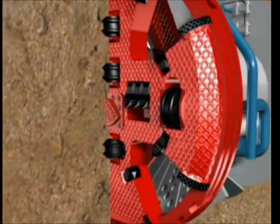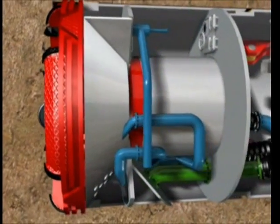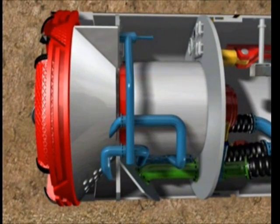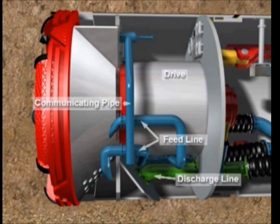In mixed shield mode the chamber behind the crusher cone is flooded with bentonite. In this mode pressure compensation with the crusher chamber takes place via the communication pipe. The slurry and feed lines run through this chamber.